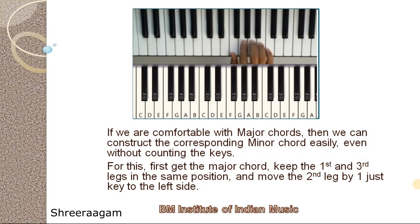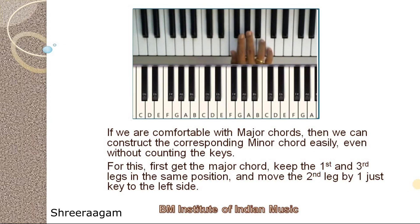Like that, you can take any major chord and arrive at a minor chord very easily. For example, this is F major chord. I am keeping the first and third finger in the same position and moving the middle finger to the left side by one key. This is F minor.